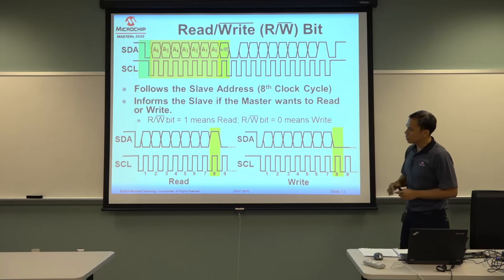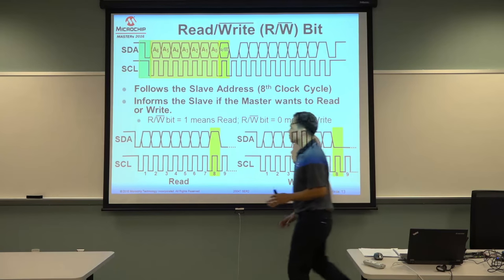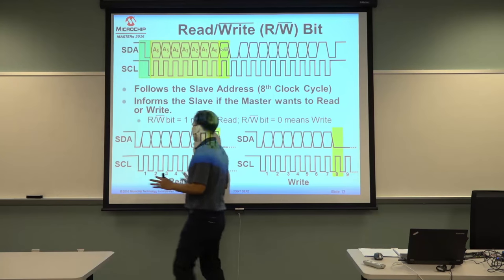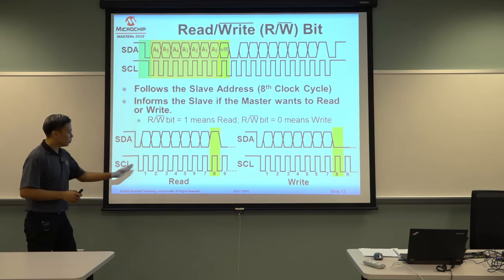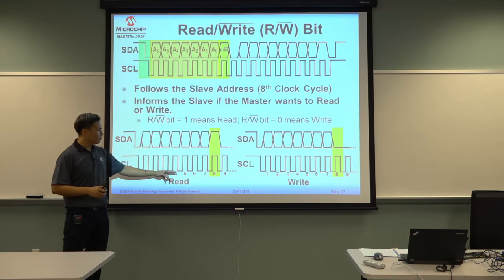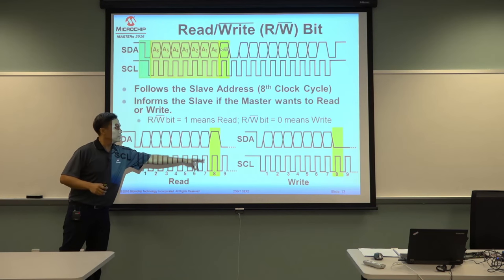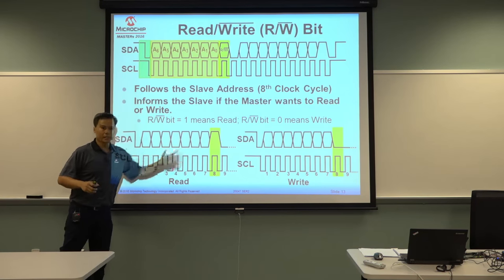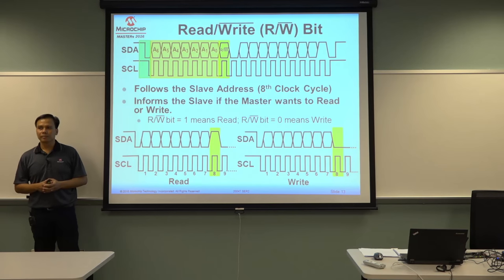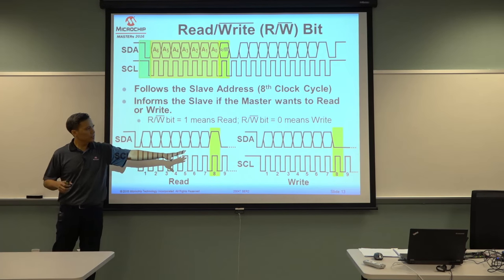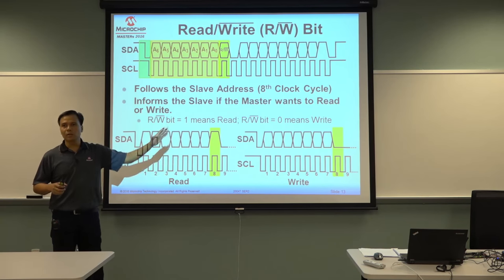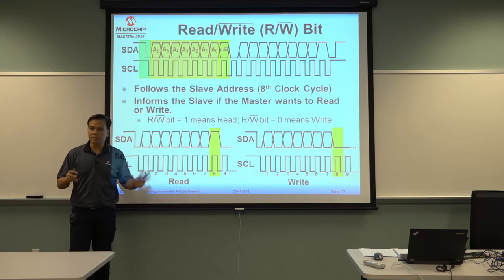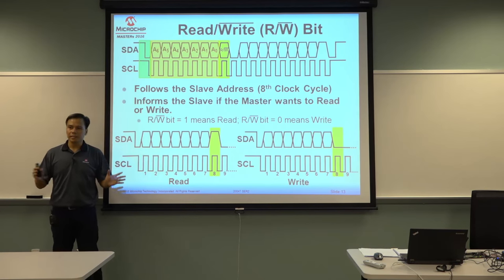Let's look at some waveforms. Since it happens on the 8th clock cycle, we count 1, 2, 3, 4, 5, 6, 7, 8 — it's high, and it's a read. On the other waveform, counting to 8 — it's low, it's a write. It's that simple.